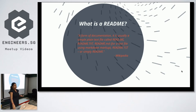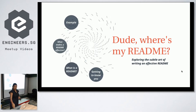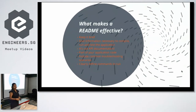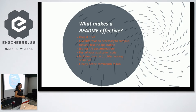The Wikipedia definition says it's a form of documentation, usually a simple plain text file, called by a whole bunch of different names, that can use Markdown and may or may not have a file extension. But my talk is about exploring the subtle art of writing an effective README.